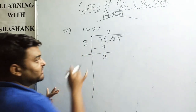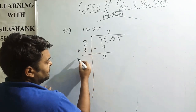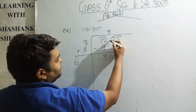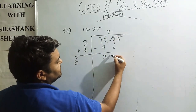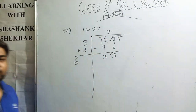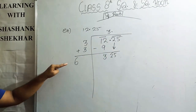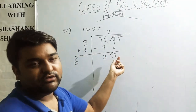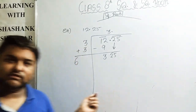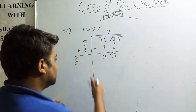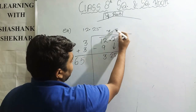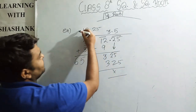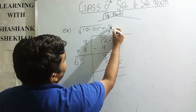Now I will add 3 to itself to get 6, just as in the previous case, and place the decimal point. Bringing down the next pair, 25, we get 325. Multiplying 65 × 5 = 325. Since the unit place is 5, and 5² = 25, the digit is 5. So the square root of 12.25 is 3.5.